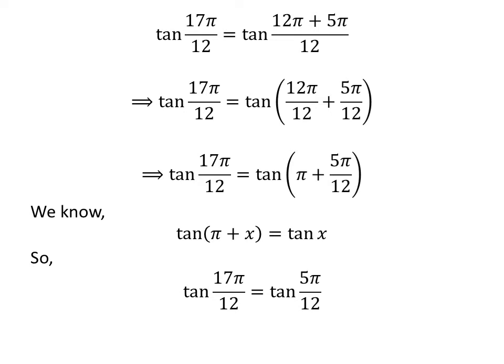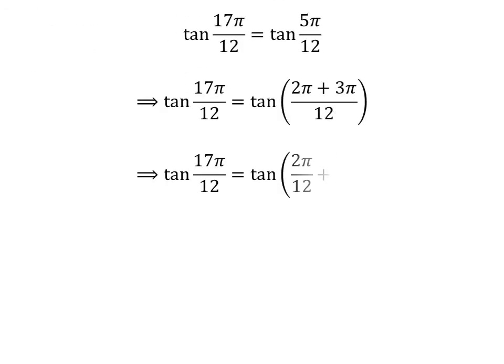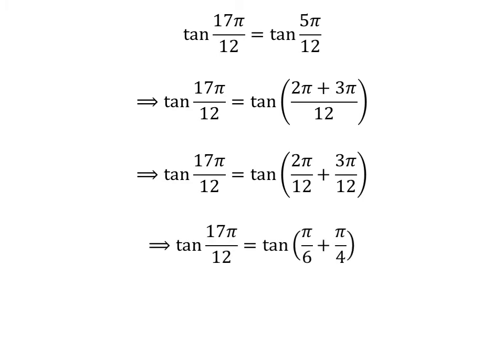So tangent of 17 times pi upon 12 is equal to tangent of 5 times pi upon 12. Following the above steps, we get tangent of 17 times pi upon 12 is equal to tangent of pi upon 6 plus pi upon 4.